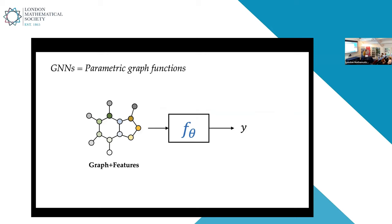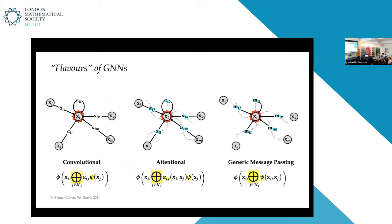Graph neural networks are parametric functions that work on graph-structured data. Typically, you are given a graph with features on nodes or edges, and a parametric function outputs something — for graph classification, a number like toxicity. Different graph neural networks differ in how these functions are implemented. The majority follow the message-passing paradigm: the function is constructed by a sequence of layers where every node aggregates features from its neighbors using a permutation-invariant operator, making the network respect permutation symmetry by design.